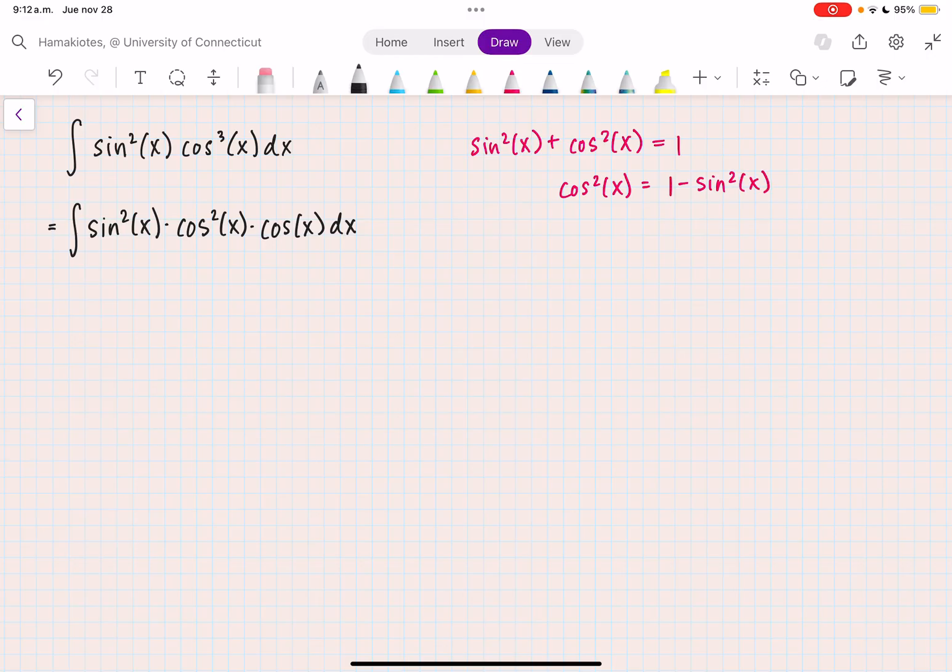Now plugging this in, I get sine squared of x times cosine squared, which is one minus sine squared of x, and then I still have this cosine of x dx.